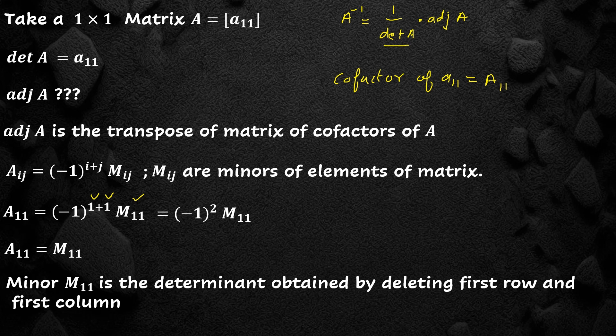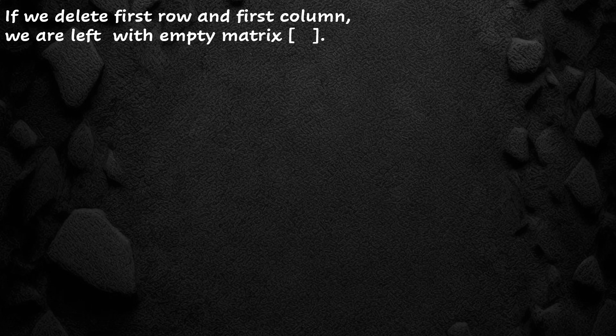Now, this is the problem we will face: our matrix is A11. If we delete the first row and first column, we are left with an empty matrix. This is the key point we are going to discuss in this video — how shall we find the adjoint of this empty matrix.